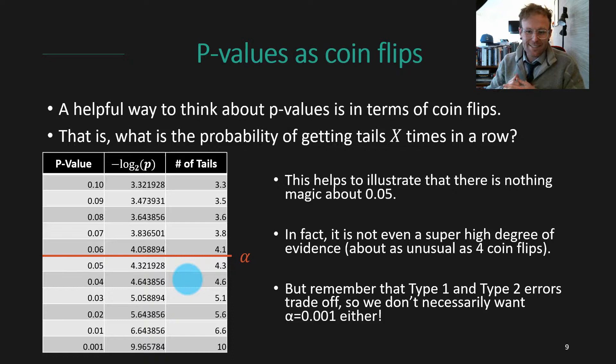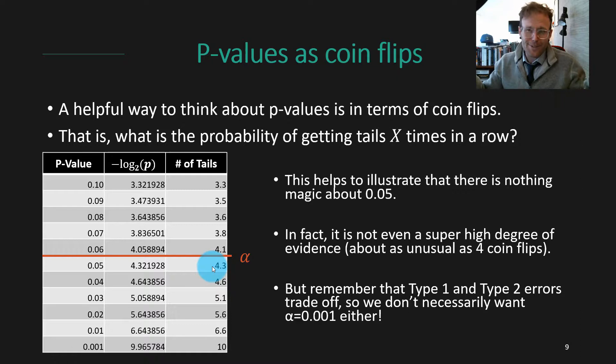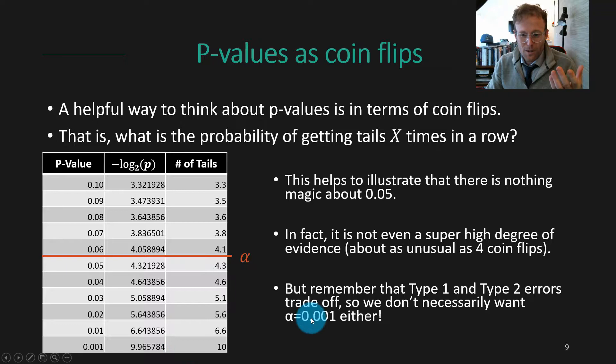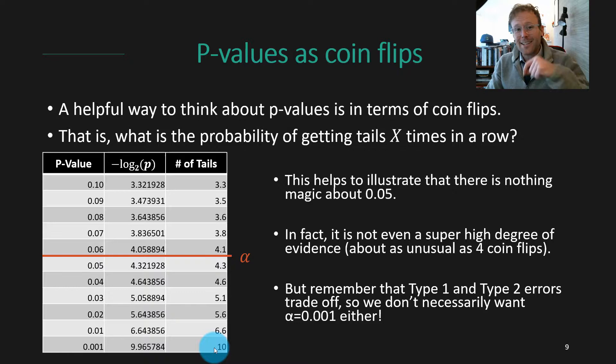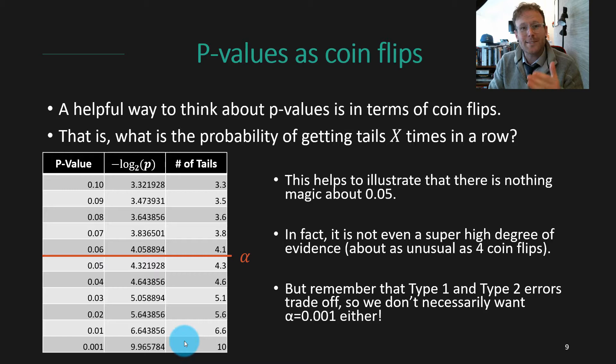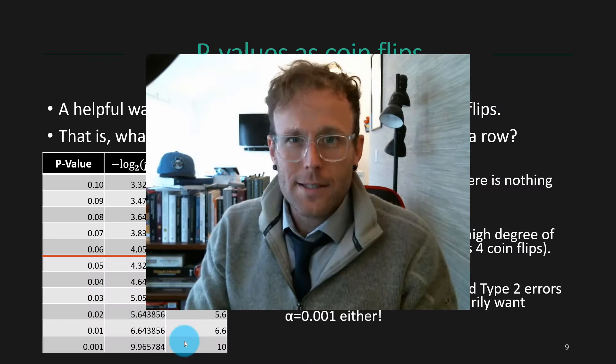Getting four heads in a row isn't a super high bar — it happens all the time. But we also don't want to set the bar much lower: if we set alpha at 0.001, we'd need the equivalent of ten tails in a row before rejecting the null, which would drastically increase the type 2 error rate and cause us to miss effects that are actually present. Making the type 1 error rate too low makes the type 2 error rate that much higher.